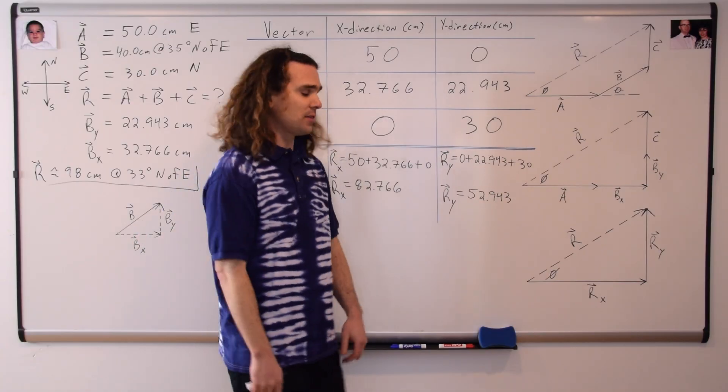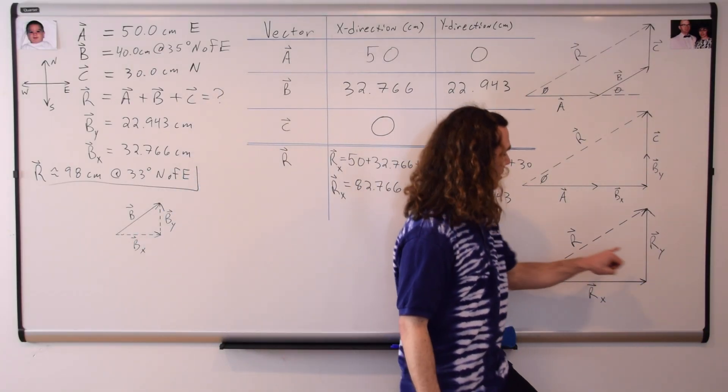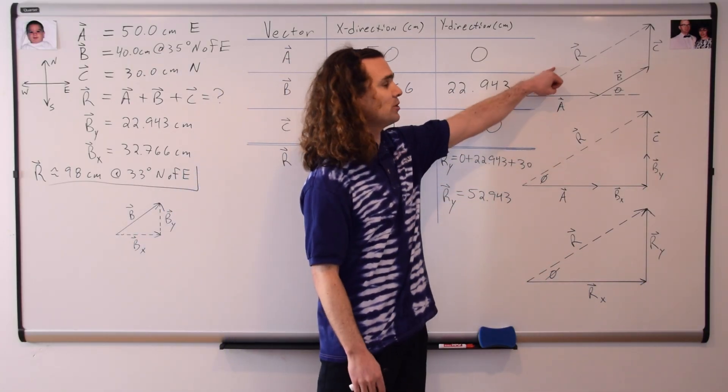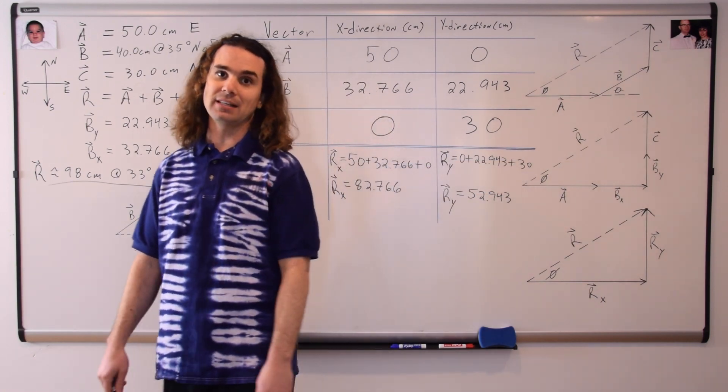And you can see that the components of vector R add up to the same resultant vector as we solved for in our previous lesson.